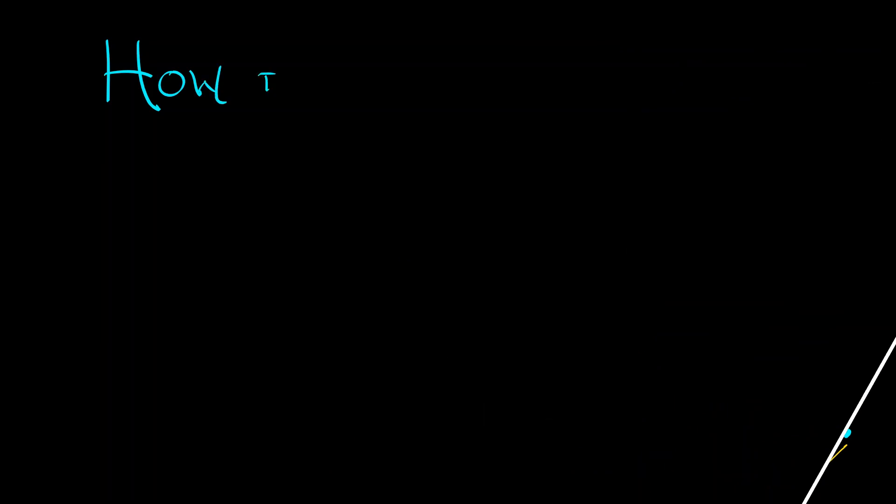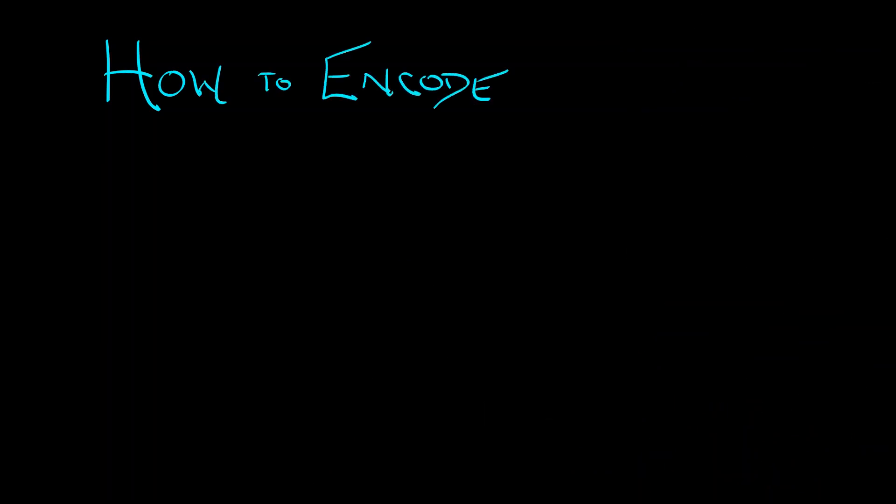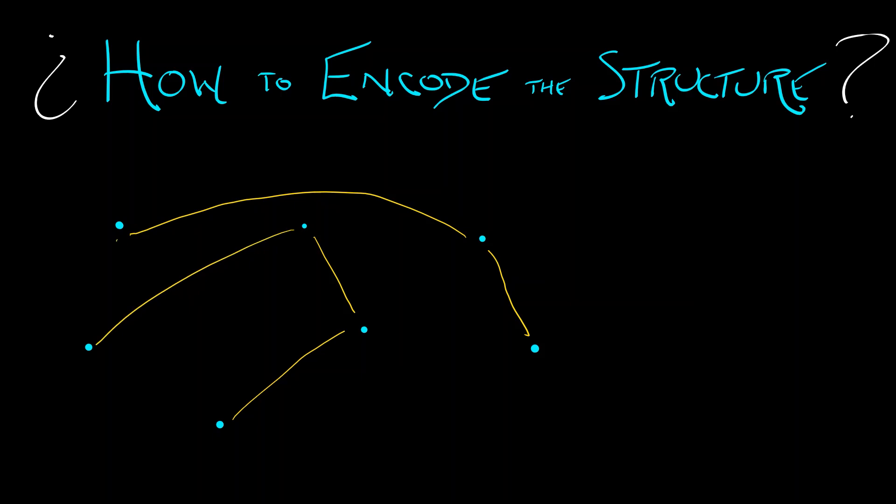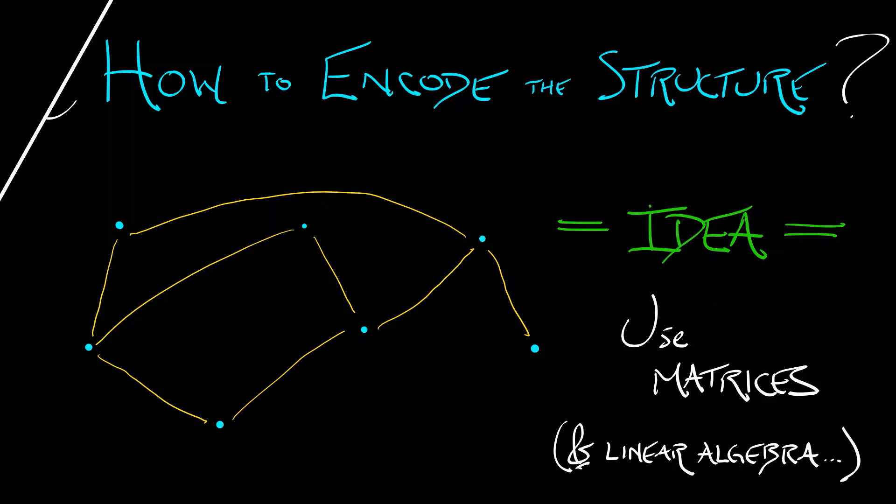The question that we want to address is how do we encode the structure of a graph? How do we encode those topological properties? The idea is that we're going to use matrices to do that and use all the things we know about linear algebra. So to that end, let's go over a couple of definitions.